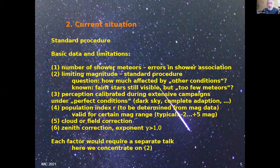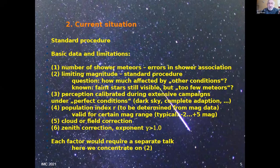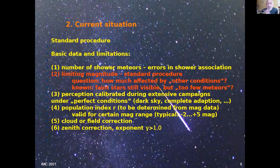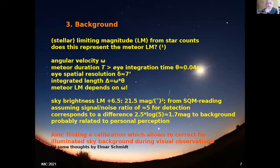There's also an error that may affect the population index, which is usually determined from magnitude data and is assumed to follow a more or less exponential rise over a range of roughly magnitude −2 to +4 or +5. We leave out other corrections for the moment — you could talk about each of those points for an hour — and concentrate on the second question: the limiting magnitude.